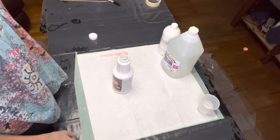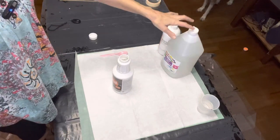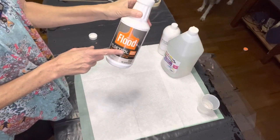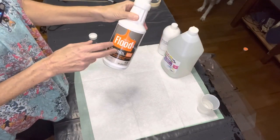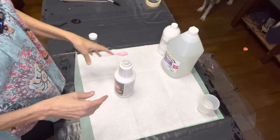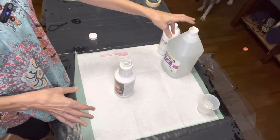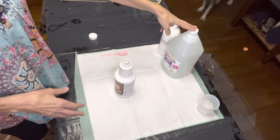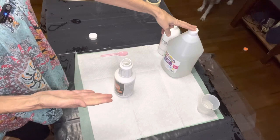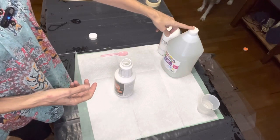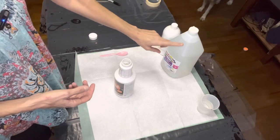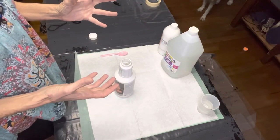So everybody normally buys Floetrol or sometimes a pouring medium, and so what I learned is you could take glue, Elmer's Glue-All, any kind of PVA glue. But I bought clear to see if it will make the colors come out more vibrant.